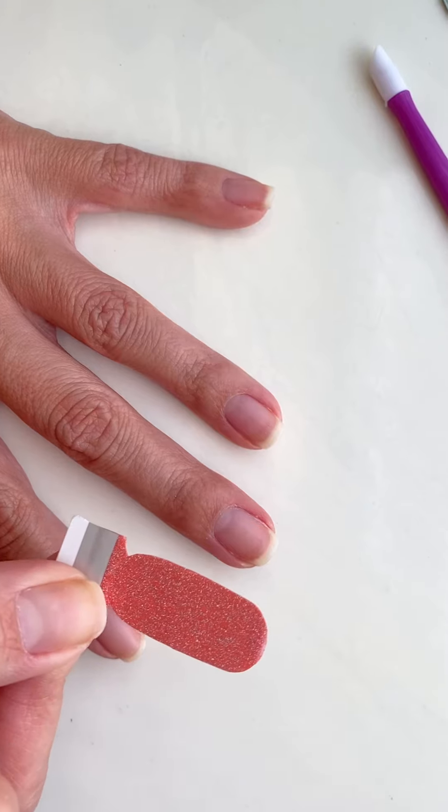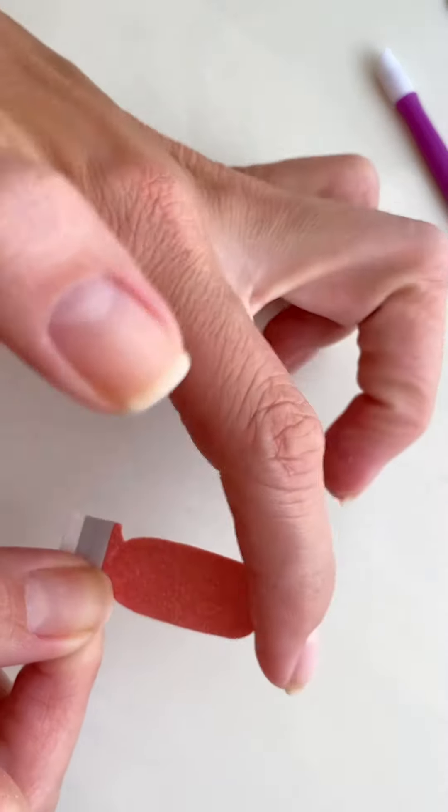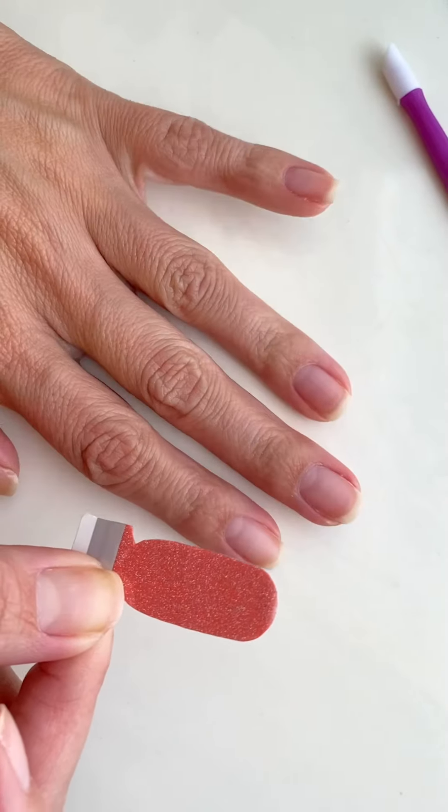When you have a color straight strip like this, a common mistake that I see is that people will not use the rounded end at the cuticle line.